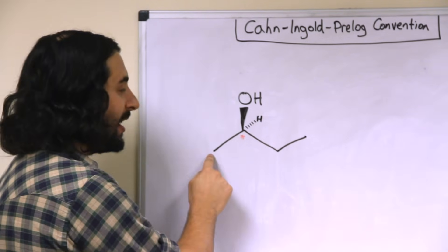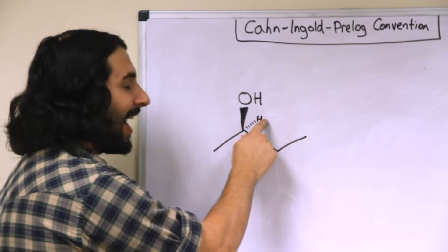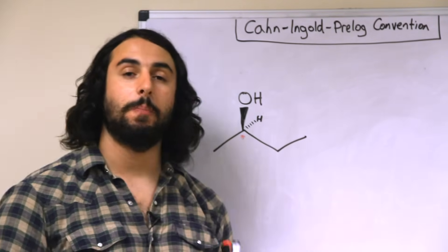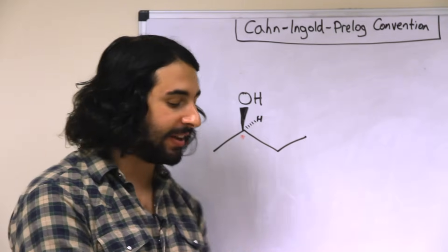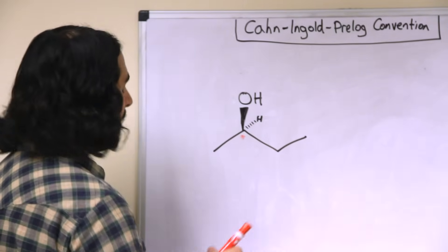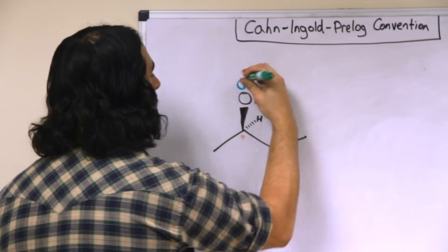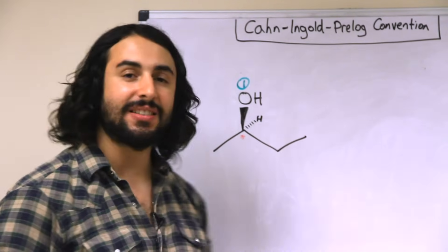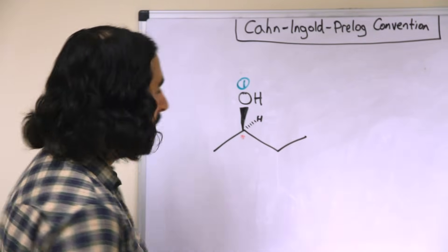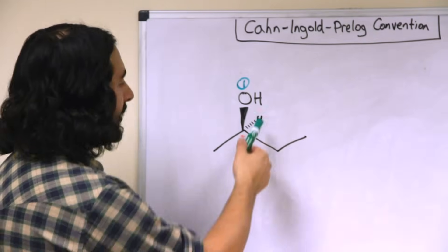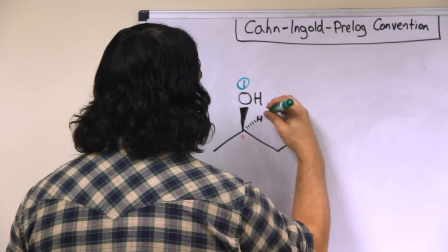Because we are going by atomic mass, we know immediately that the oxygen atom is going to be priority one because that is the heaviest atom of the atoms in question. Likewise, the hydrogen is the lightest atom, so that is certainly going to be priority four.